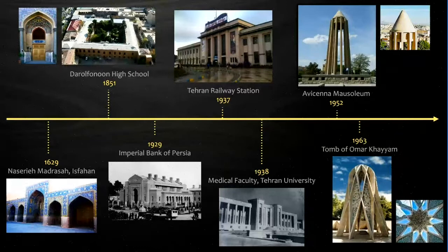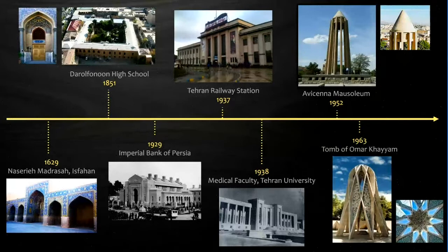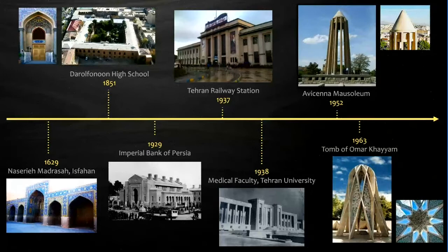Traditional buildings constructed with materials such as mud, brick, and wood gave way to modern buildings constructed with modern materials: concrete, beams, and stone. Moreover, these modern buildings were made of plain brick walls, square window openings, and sloped roofs. Traditional elements such as pointed arch windows, faience decoration, tiles, walls, and domes were eliminated from modern buildings.